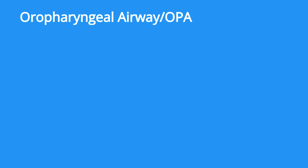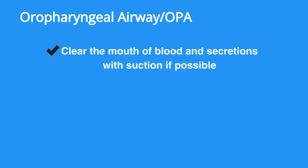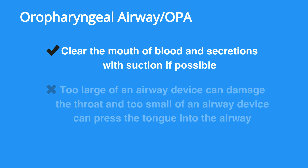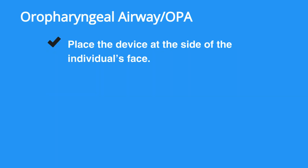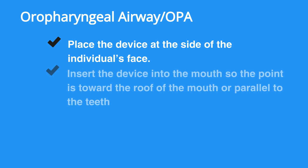To insert an oropharyngeal airway, or OPA, first clear the mouth of blood and secretions with suction if possible. When selecting an airway device, keep in mind that too large of a device can damage the throat and too small of a device can press the tongue into the airway. Place the device at the side of the individual's face, and make sure to choose a device that extends from the corner of the mouth to the earlobe. Insert the device into the mouth so the point is toward the roof of the mouth or parallel to the teeth.